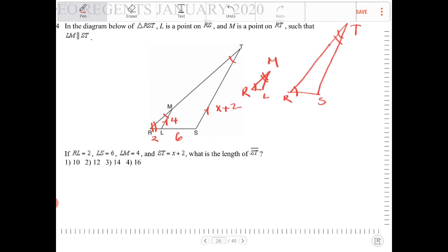So what I can do is I can set up a proportion, and I can say 2, right, which is RL, is to the entire length RS. That is going to be a length of 8. It is going to be equivalent to 4 over the length of X plus 2.